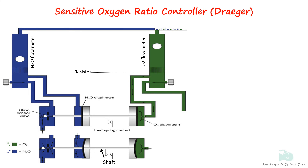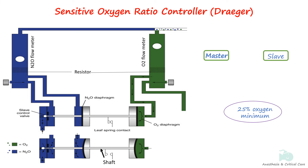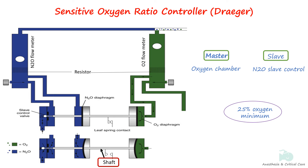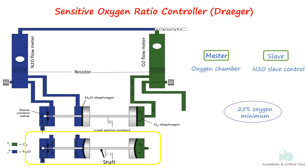The Sensitive Oxygen Ratio Controller is a pneumatic master-and-slave system designed to maintain a minimum 25% oxygen concentration. It consists of an oxygen chamber (master control), a nitrous oxide chamber, and a nitrous oxide slave control valve, all connected by a movable horizontal shaft. Oxygen and nitrous oxide flow into the system via flow meters with resistors creating back pressures toward the chambers. These pressures affect rubber diaphragms attached to the horizontal shaft. The shaft's movement regulates the nitrous oxide slave control valve. When back pressure on the oxygen diaphragm exceeds that of nitrous oxide, the shaft moves left, opening the nitrous oxide valve. Conversely, insufficient oxygen back pressure closes the nitrous oxide valve.